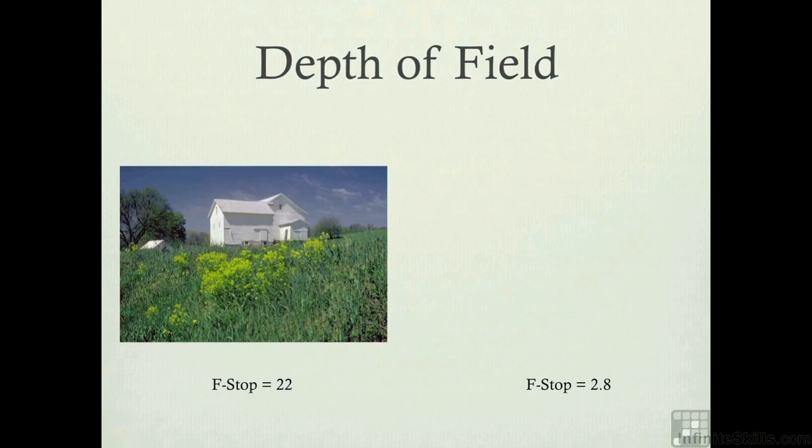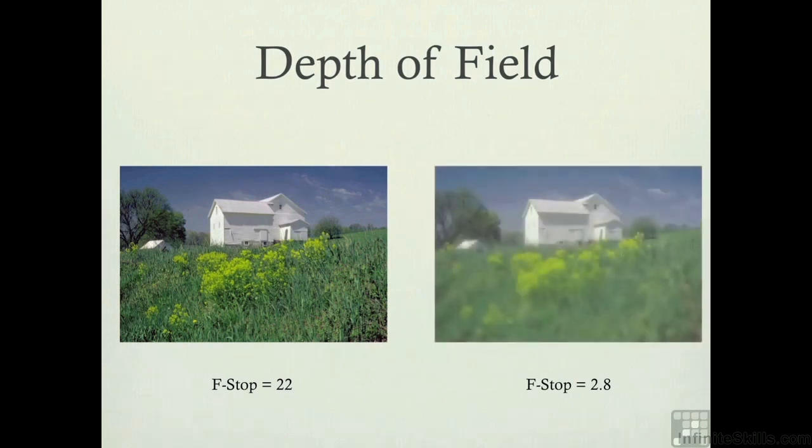Now look when the lens was opened to an f2.8. We're still focused on the farmhouse, but you will notice all of the foreground is now out of focus because the lens was opened up. But that's a great effect. There's nothing wrong with doing that. How much depth of field do you want?